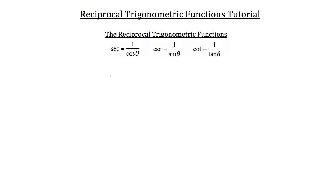The reciprocal of cosine is secant. Secant is 1 over cosine theta. The reciprocal of sine is cosecant — cosecant is 1 over sine theta. And cotangent is the reciprocal of tangent, so it's 1 over tangent theta.